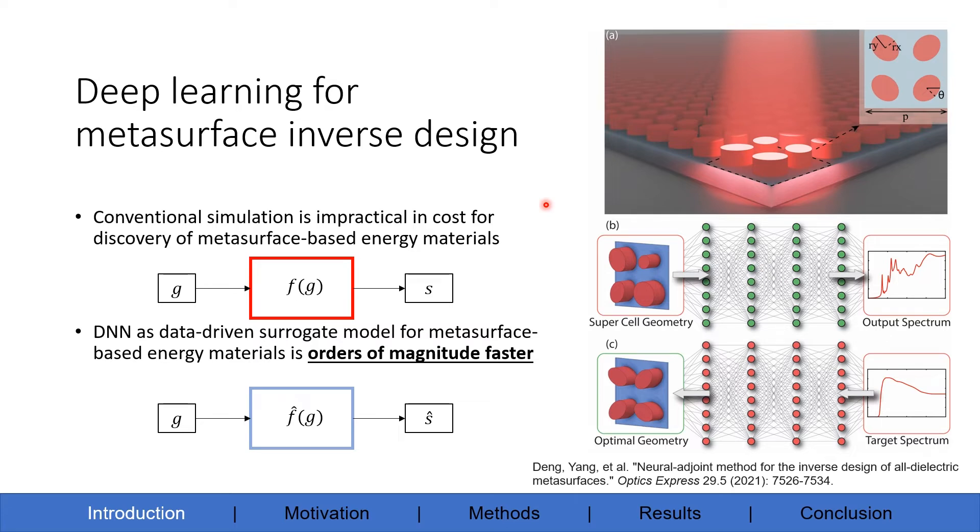To design such optimized emission spectrum, we need a really complex geometry space, and conventional simulation is impractical due to its long simulation time going from G to S. However, deep neural network as a data-driven surrogate model is a great alternative to conventional simulation.